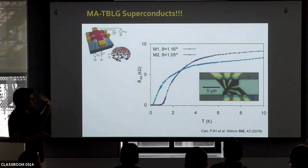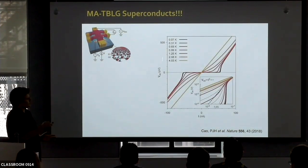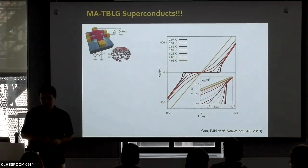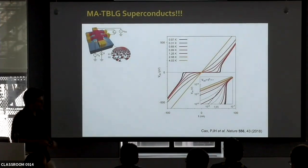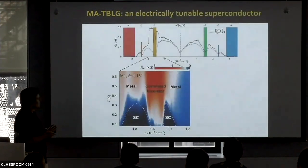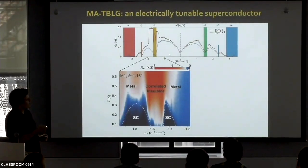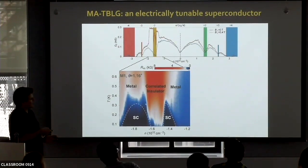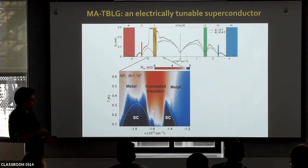The nice thing is we have gate voltage control over the density. We can measure resistance as a function of temperature and density around the correlated insulating state for holes. Here you see the correlated insulating state at two holes per moiré unit cell. With a few more holes, we have a superconducting dome. With a few electrons with respect to this correlated insulating state for holes, we have another superconducting dome.